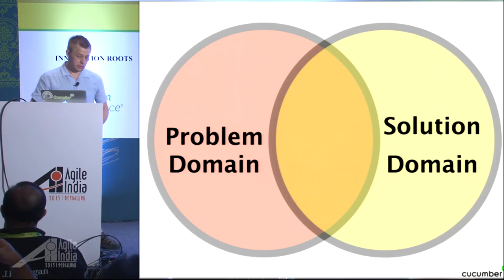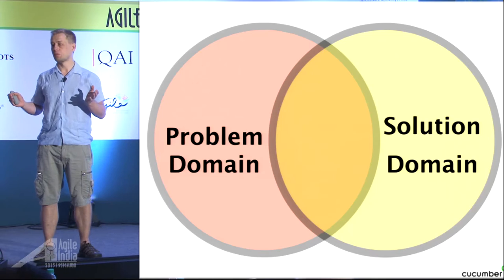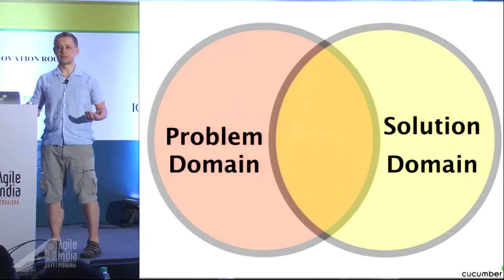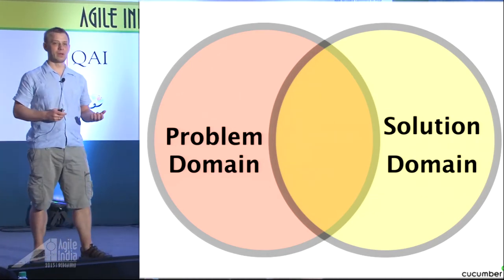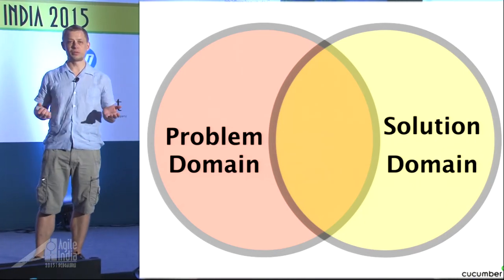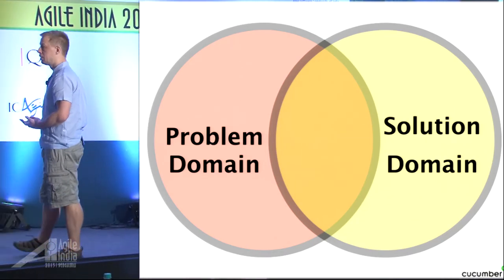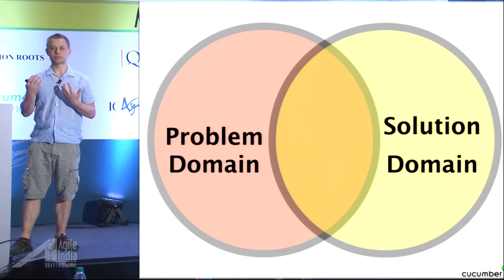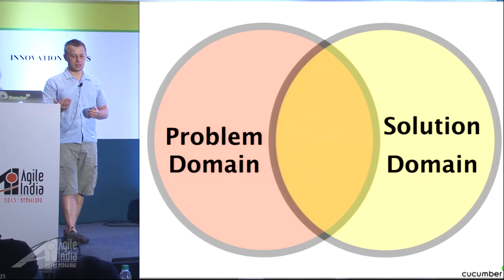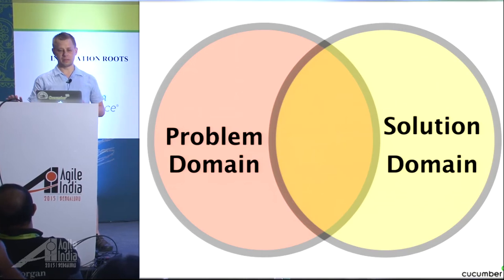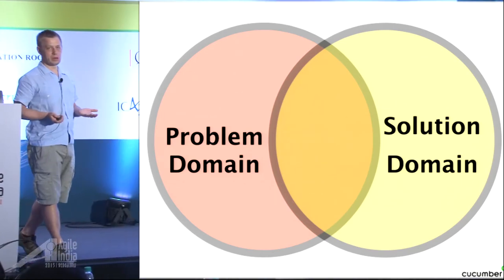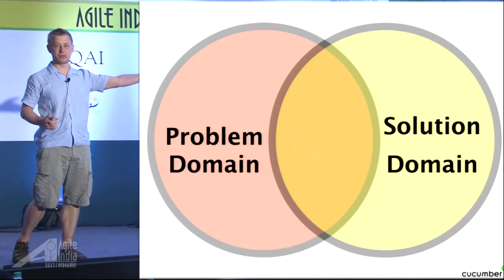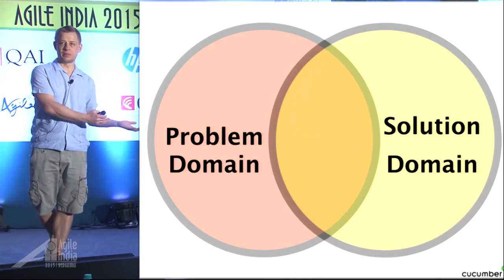One big problem on projects is a communication problem because we don't speak the same language — we have a completely different vocabulary. There's a translation cost whenever someone in the solution domain — typically a tester or developer — has a conversation with someone in the problem domain. They're not going to understand one another. If we can increase the overlap where people talk the same language, we'll have fewer misunderstandings.